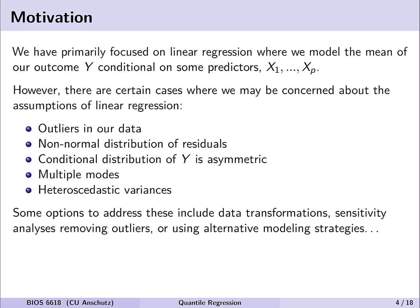For example, we may have outliers in our data that we're worried are affecting the estimation of our mean and our variability. We may find that our residuals have a non-normal distribution violating that assumption. We could see that the conditional distribution of Y is asymmetric. There could also be multiple modes in our data or heteroscedastic variances. We've discussed some ways we can address these issues such as data transformations or maybe sensitivity analyses removing outliers. However, there are other alternative modeling strategies to consider.